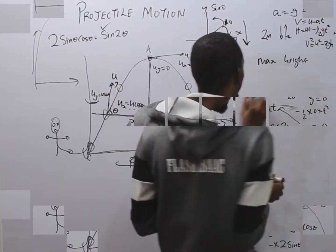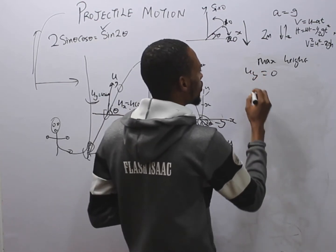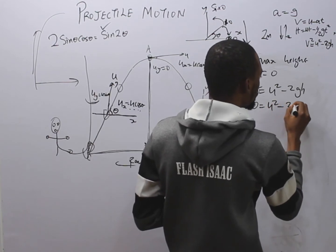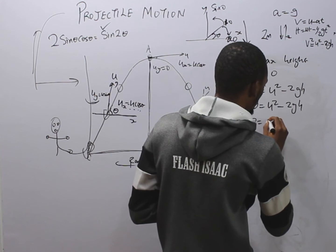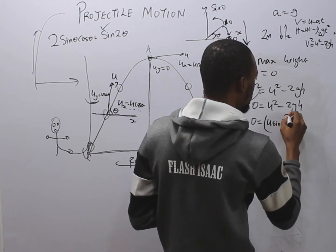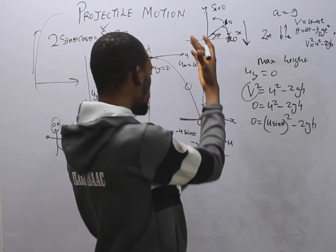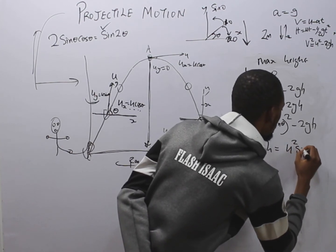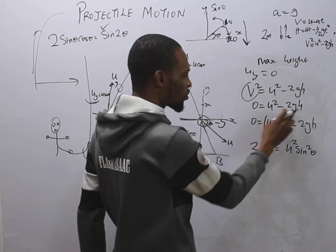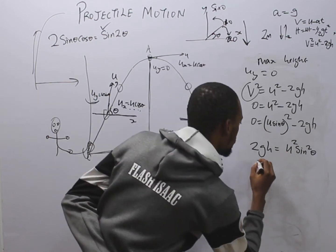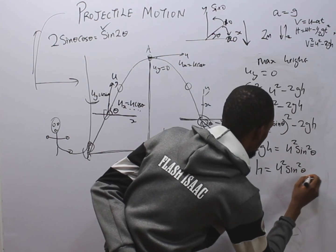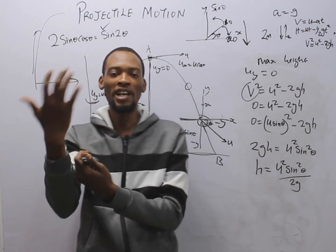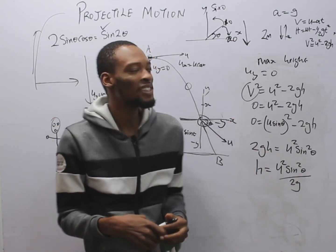For maximum height, at the top u_y = 0. Using v² = u² − 2gh and setting v = 0: 0 = (u sin θ)² − 2gH. Solving: 2gH = u² sin²θ, giving the maximum height formula H = u² sin²θ / (2g). At maximum range, the angle is 45°, so 2θ = 90° and sin 2θ = 1. At maximum height, θ = 90°, and sin 90° = 1, so the formula simplifies to H = u² / (2g).